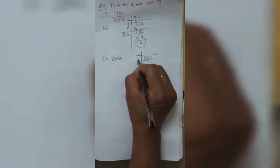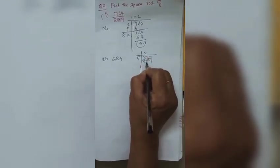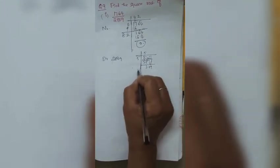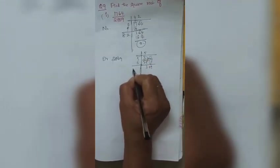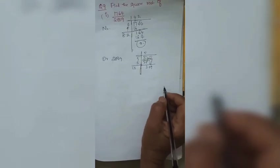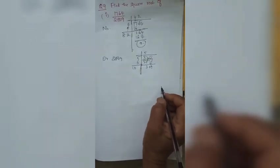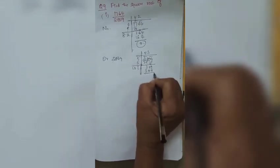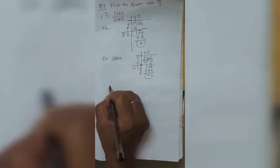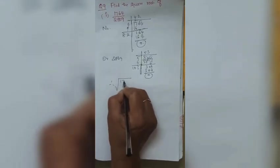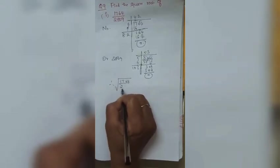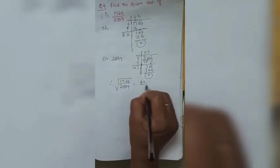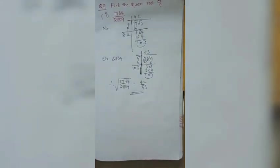For 2809: 5² = 25, 28 − 25 = 3, bring down 09 to get 309. Add 5 to divisor: 10. Try 103×3 = 309, remainder 0. So √2809 = 53. Therefore √(1764/2809) = 42/53, which is the required answer.